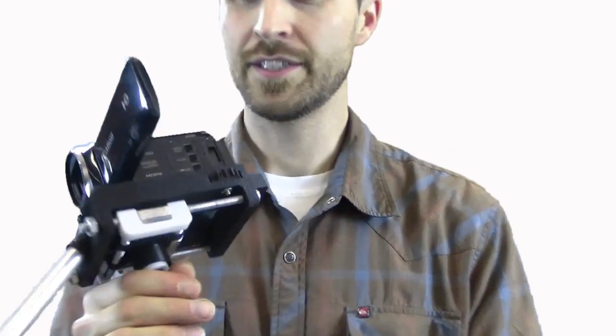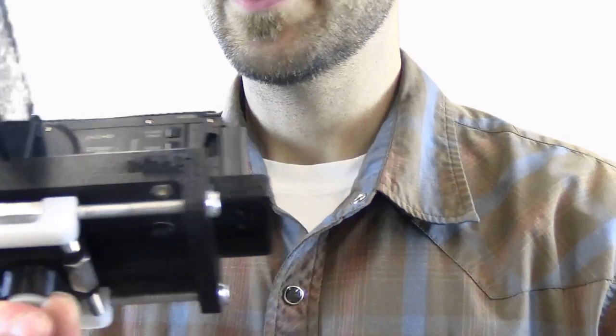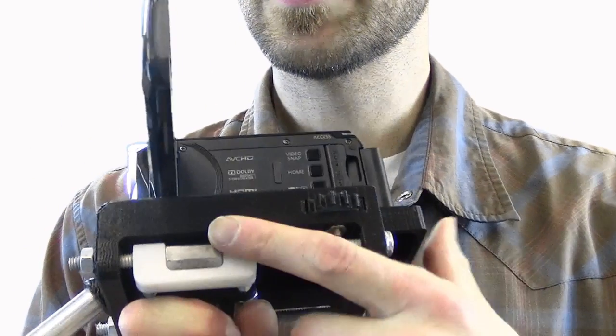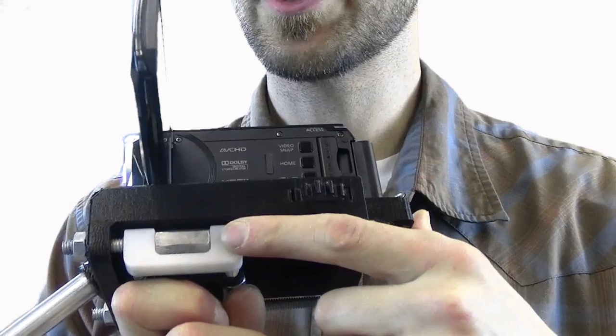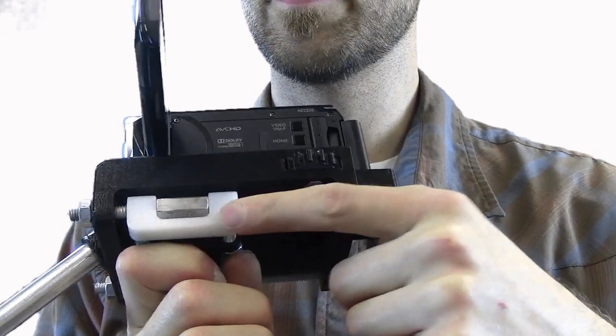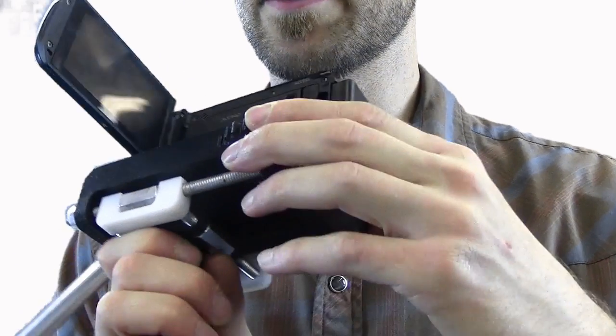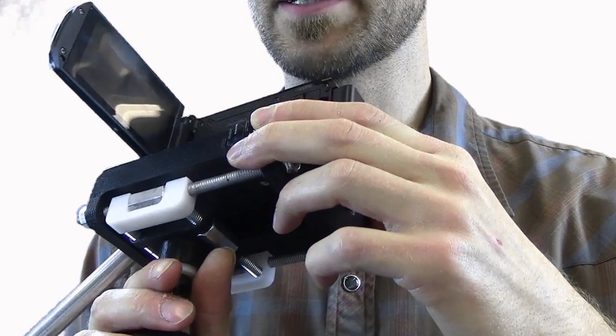As you can see on this device, I've got the trim rollers here. So this is going to allow me to change the position of the handle front and back. The other trim roller is going to allow me to position the handle from side to side.